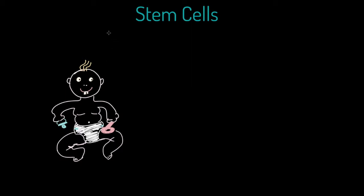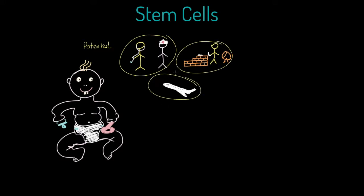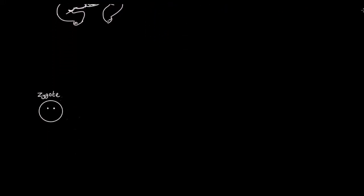I want to start this tutorial thinking about an analogy — we have a baby here, and this super cute young person has a great deal of potential. This baby could go on to specialize in all kinds of different pursuits by the time it's an adult: perhaps medicine, construction, fluid mechanics, aeronautics, or piloting an aircraft. The point is that this baby has this potential, and over the course of its life it's going to begin to specialize in certain activities. That analogy is going to stand us in pretty good stead when we start to think about stem cells.